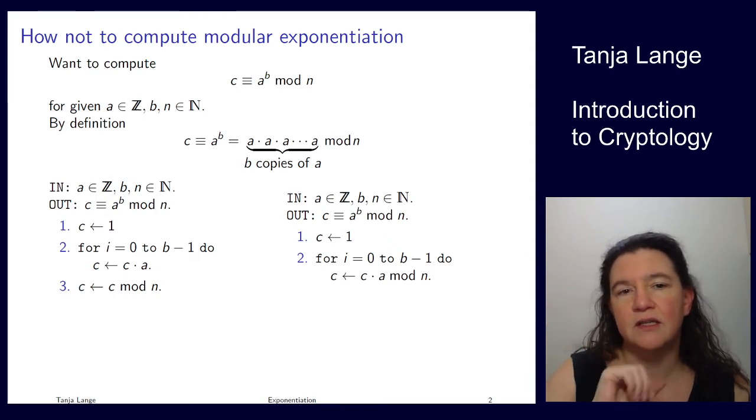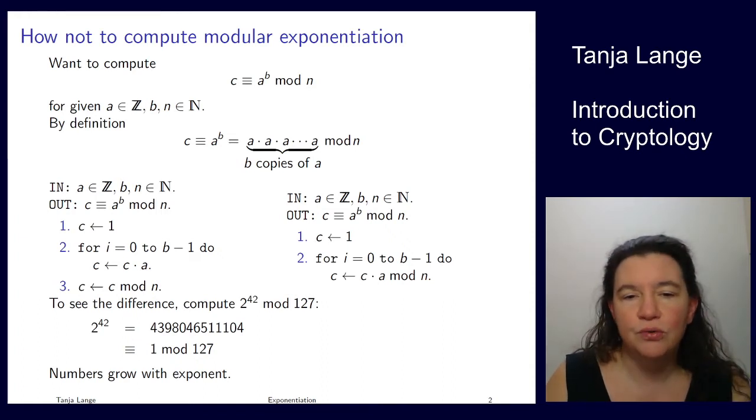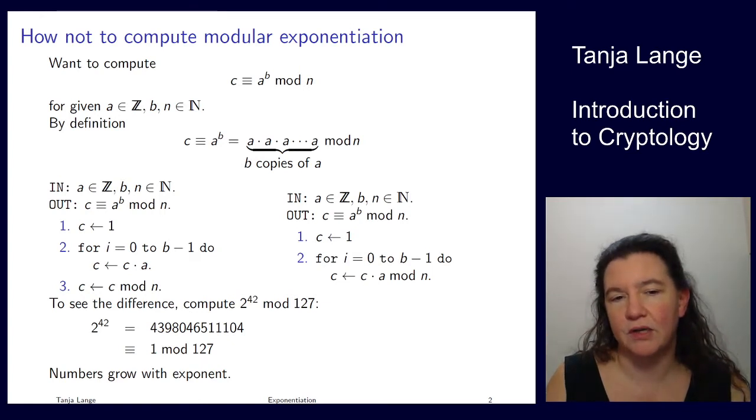But at least already to see the difference in these two copies of the same result, let's see how the intermediate result looks when we're computing 2 to the 42 modulo 127. So here's a rather large number which is 2 to the 42, and then we compute this thing and then all we do is reduce modulo just a three digit number, modulo 127. So on the left side the numbers grow a lot with the exponent and they don't get reduced with the modulos until the very end.